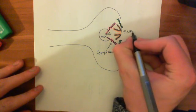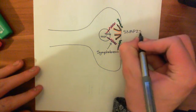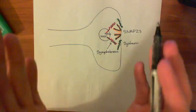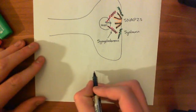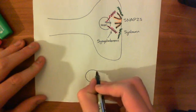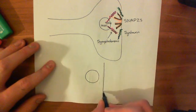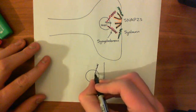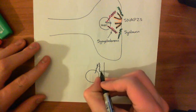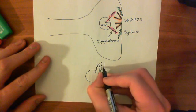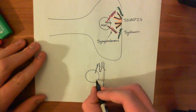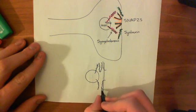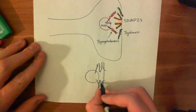These molecules are going to form complexes with one another. If we now draw this vesicle docked to the presynaptic membrane, you have the synaptic vesicle here and the presynaptic membrane below. You end up with synaptobrevin from the vesicle, SNAP25 in the middle, and syntaxin in the presynaptic membrane — with two such complexes side by side.